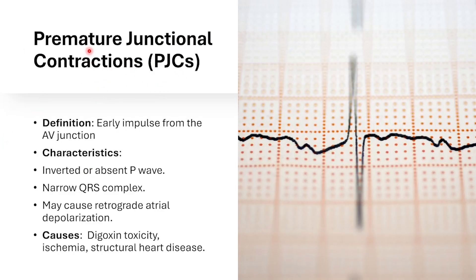The next one is premature junctional contractions. It's an early impulse from the AV junction. Just like a regular junctional rhythm, it's going to have an inverted or absent P wave and a narrow QRS complex. It may cause retrograde atrial depolarization. It's caused by digoxin toxicity, ischemia or lack of oxygen to the heart, and structural heart disease.